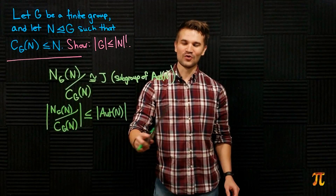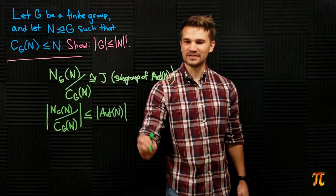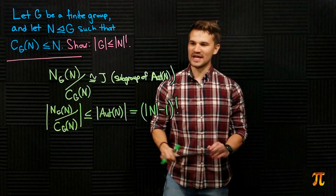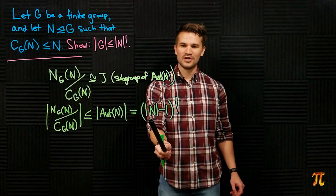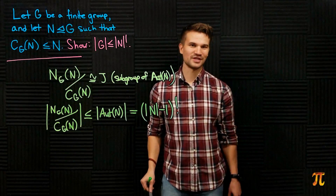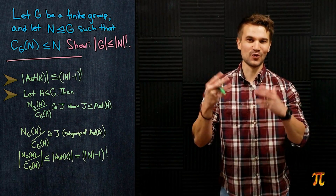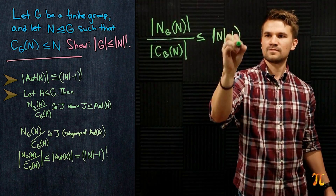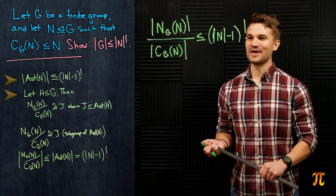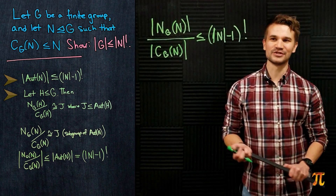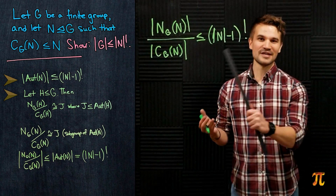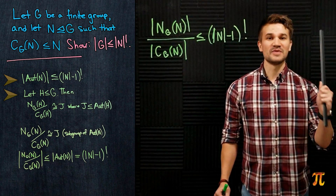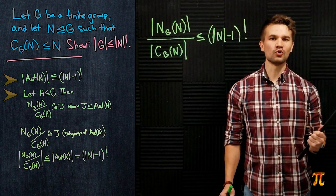We know the order of Aut(N) is less than or equal to (|N| - 1)!, so the order of the quotient N_G(N) / C_G(N) is less than or equal to (|N| - 1)!. The order of the quotient equals |N_G(N)| / |C_G(N)|. Now, since N is a normal subgroup of G, its normalizer N_G(N) is all of G, so we have |G| / |C_G(N)| ≤ (|N| - 1)!.